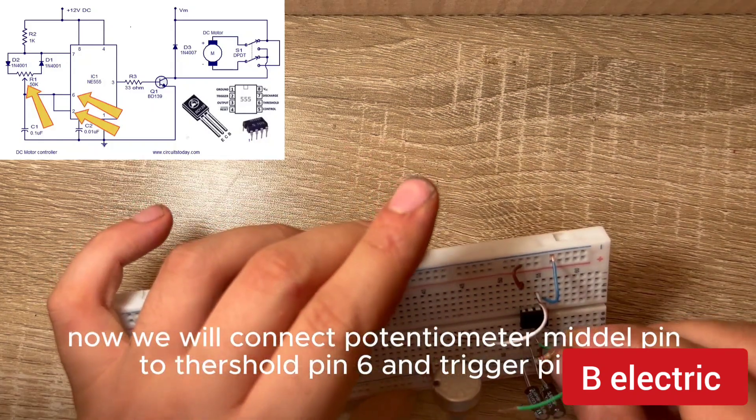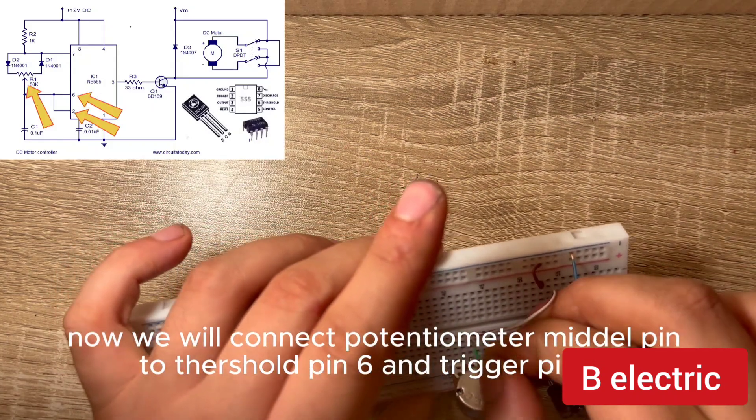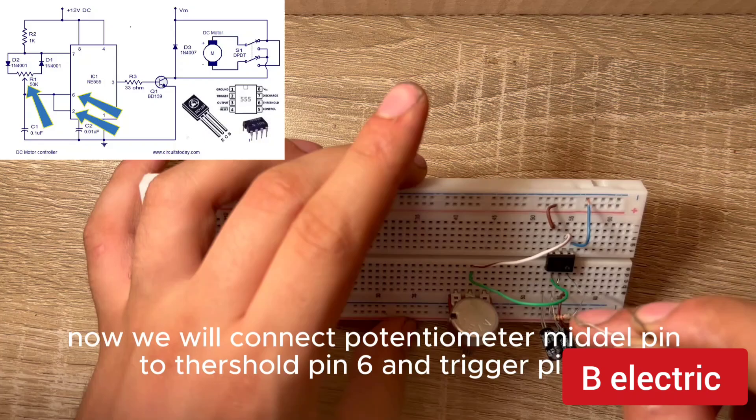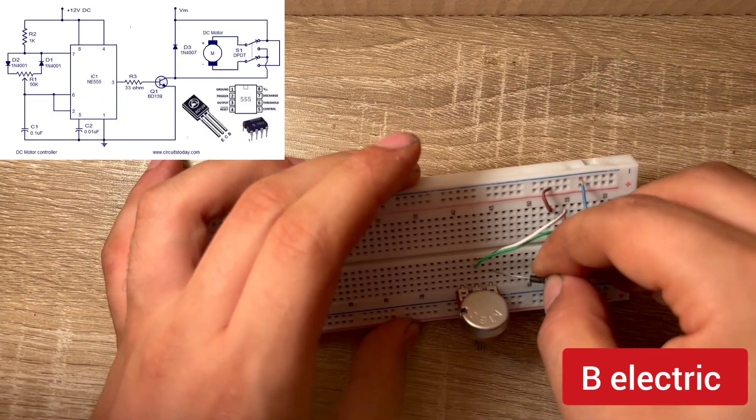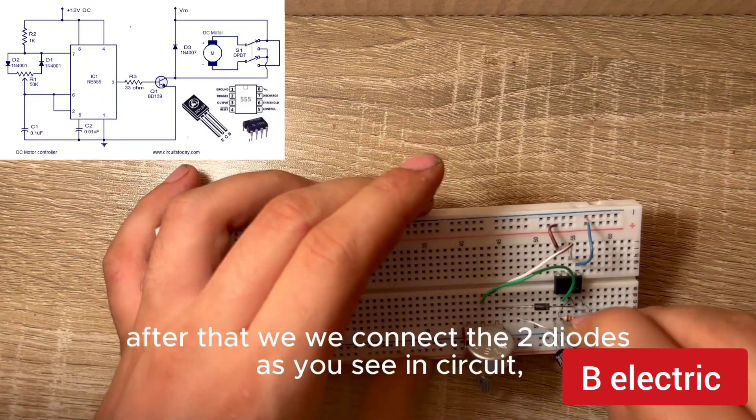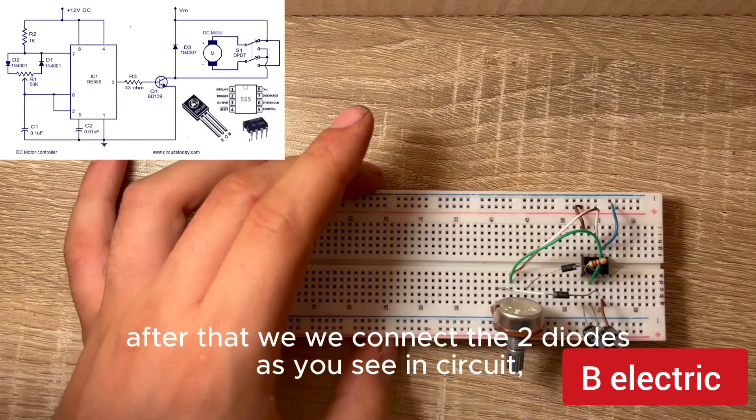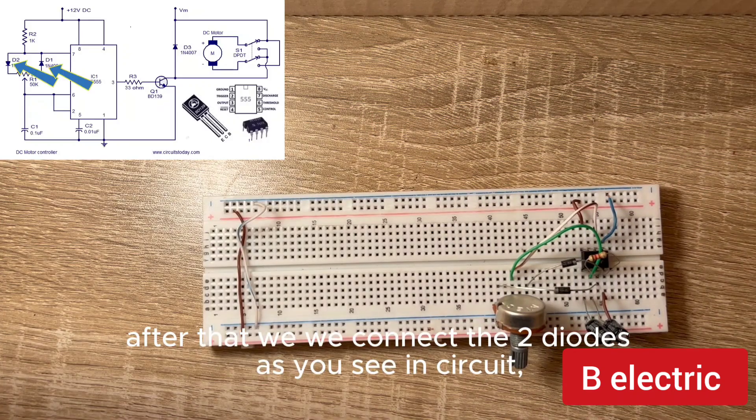Now we will connect potentiometer metal pin to threshold pin 6 and trigger pin 2. After that we connect the two diodes as you see in circuit.